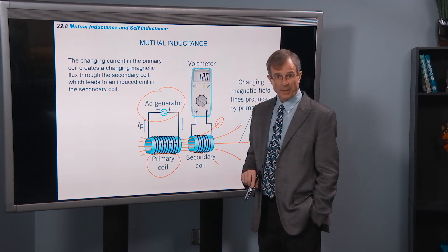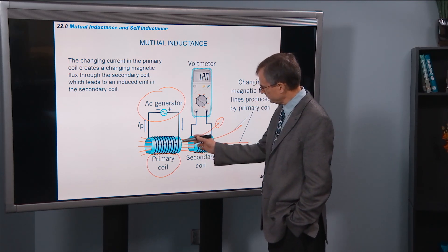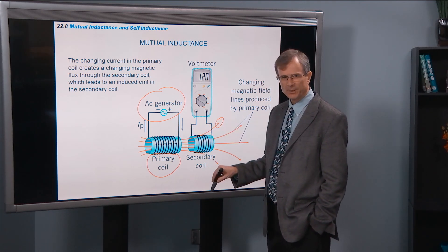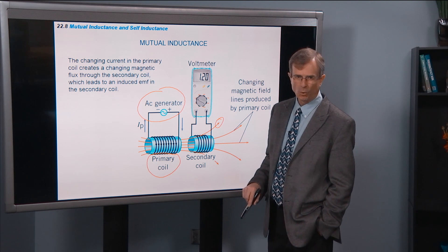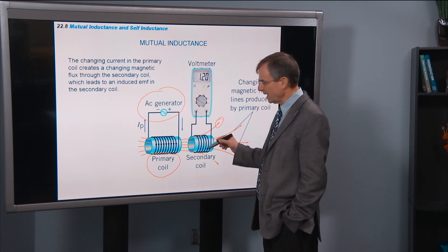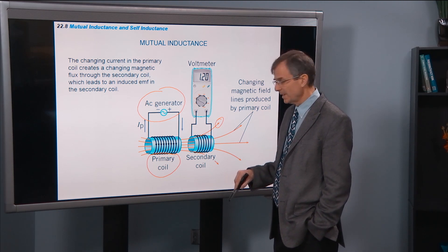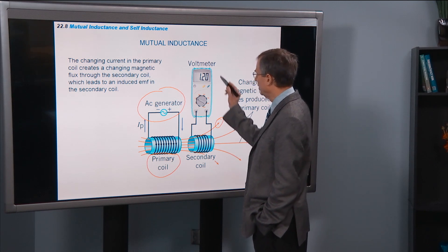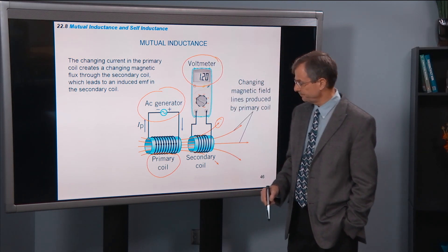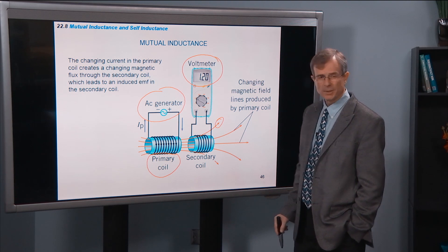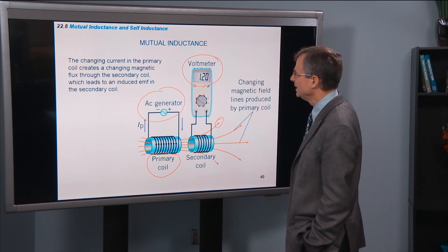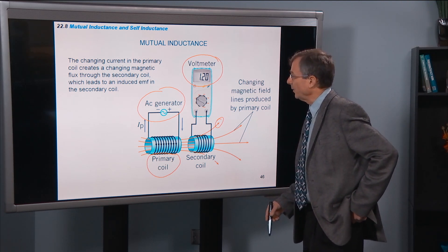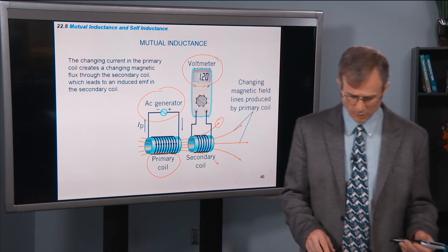If you place another coil, called the secondary coil, up next to the primary coil, what happens? Some of those magnetic field lines will pass through the secondary coil and will change the flux through that coil. That changing flux through Faraday's law will generate a current and a voltage in that coil. It's as if you connected a battery up to it. That gives you this induced EMF in the secondary coil. That's the basic idea behind mutual inductance.